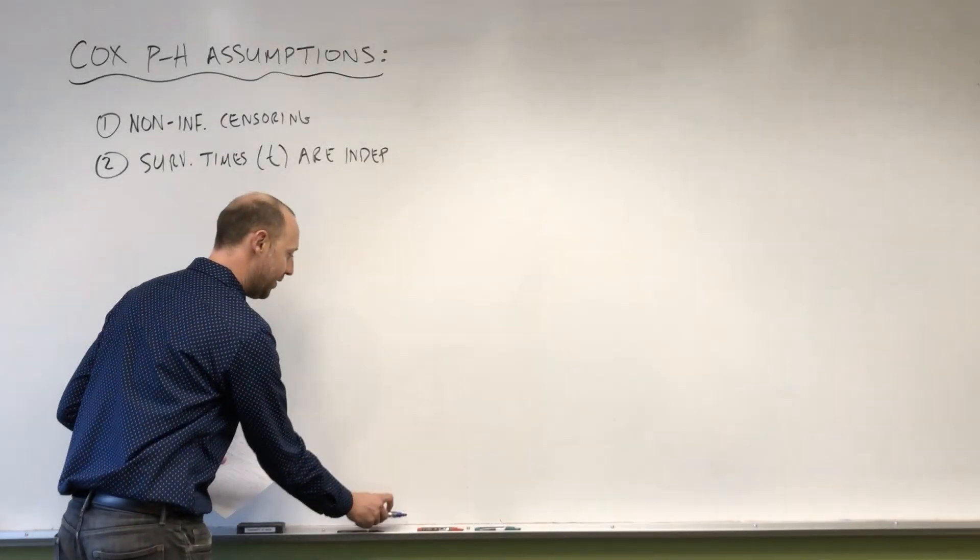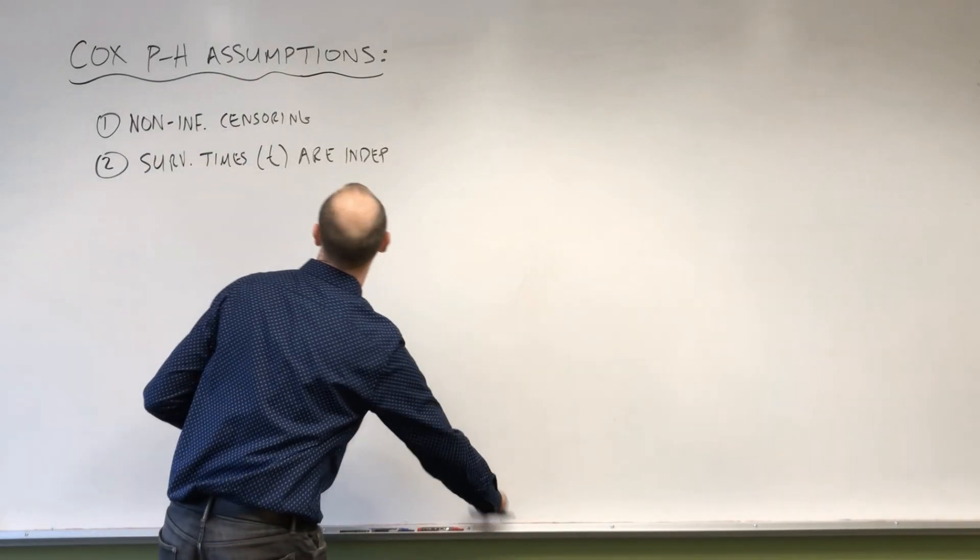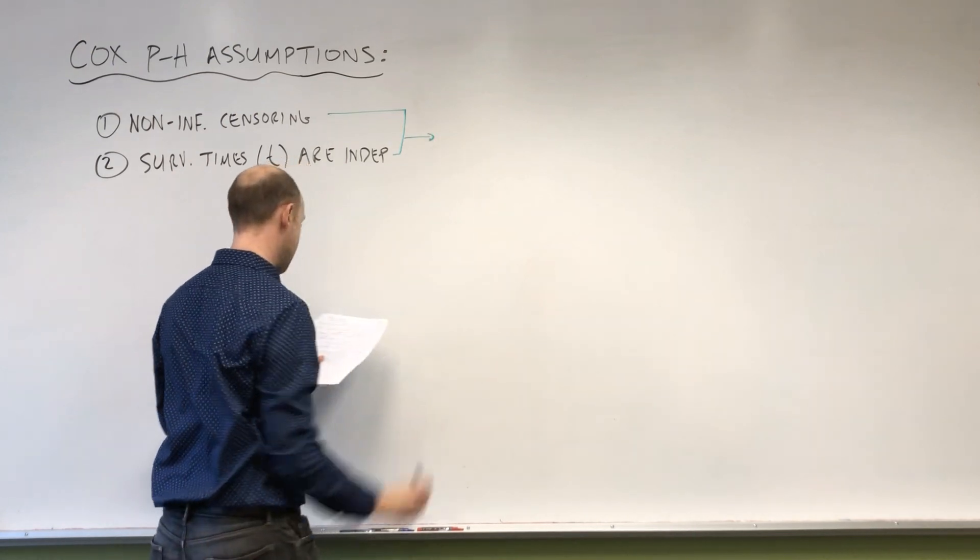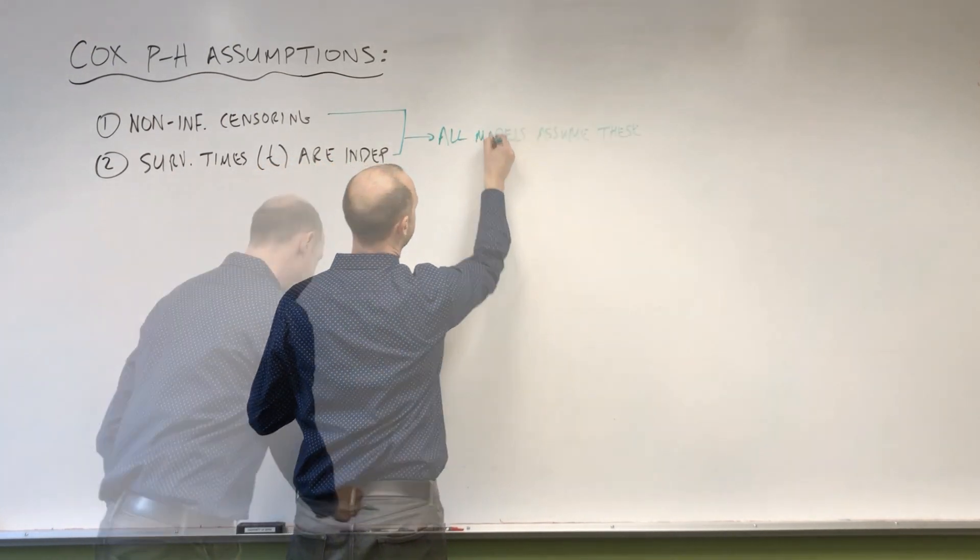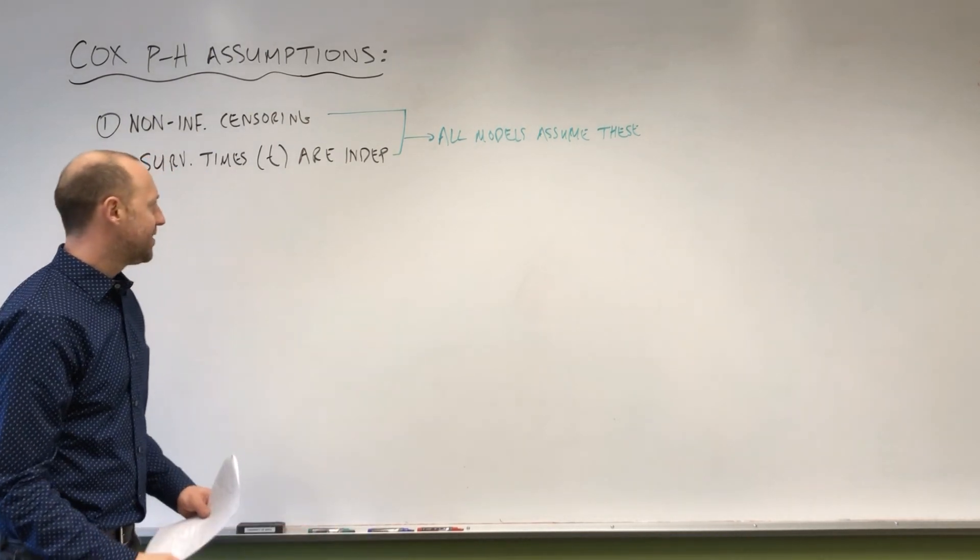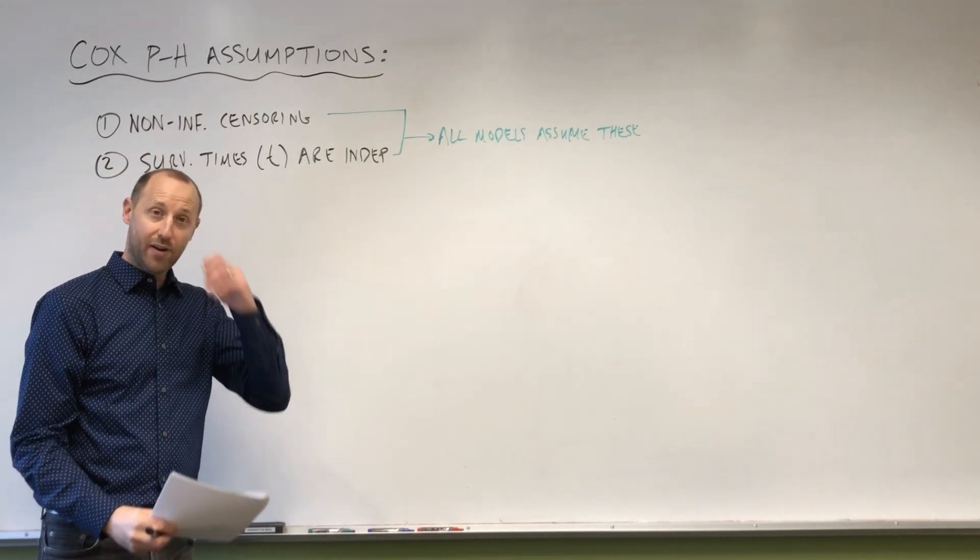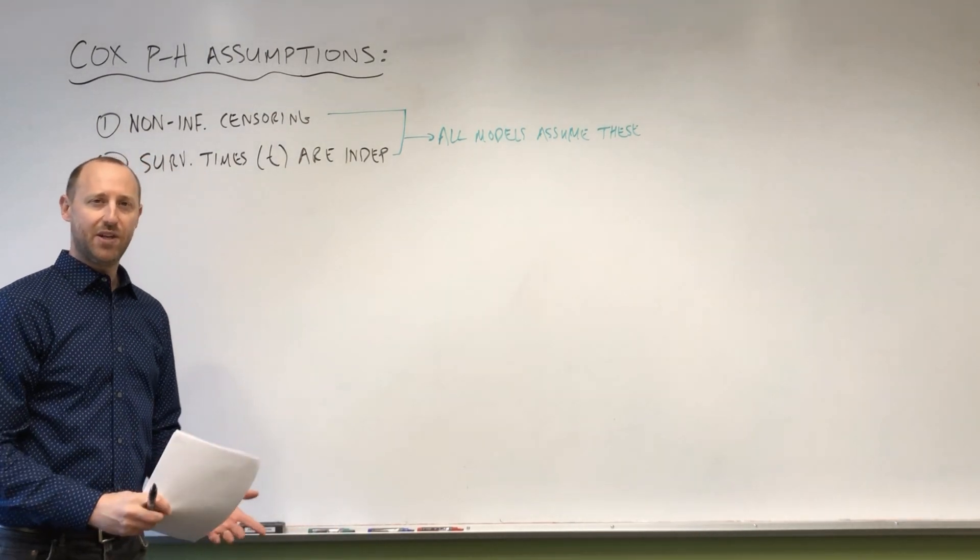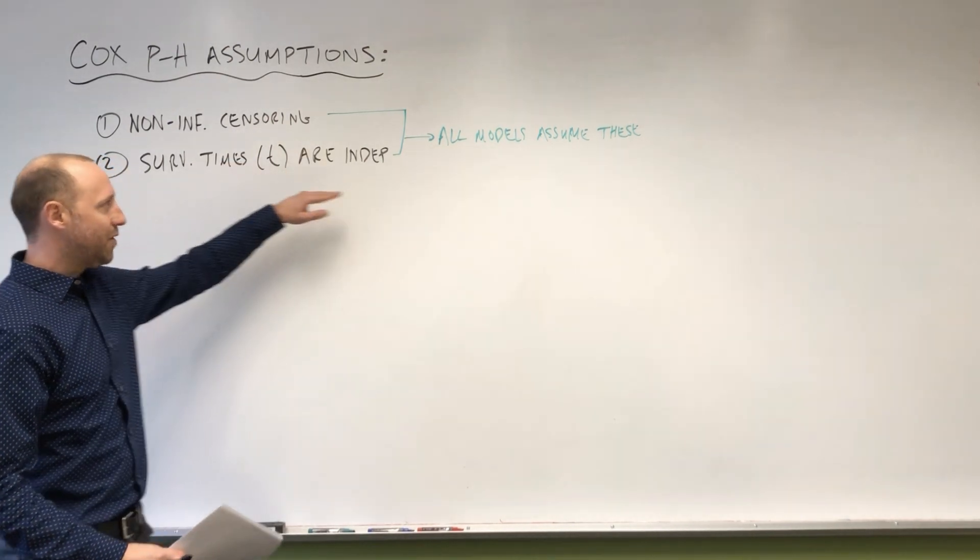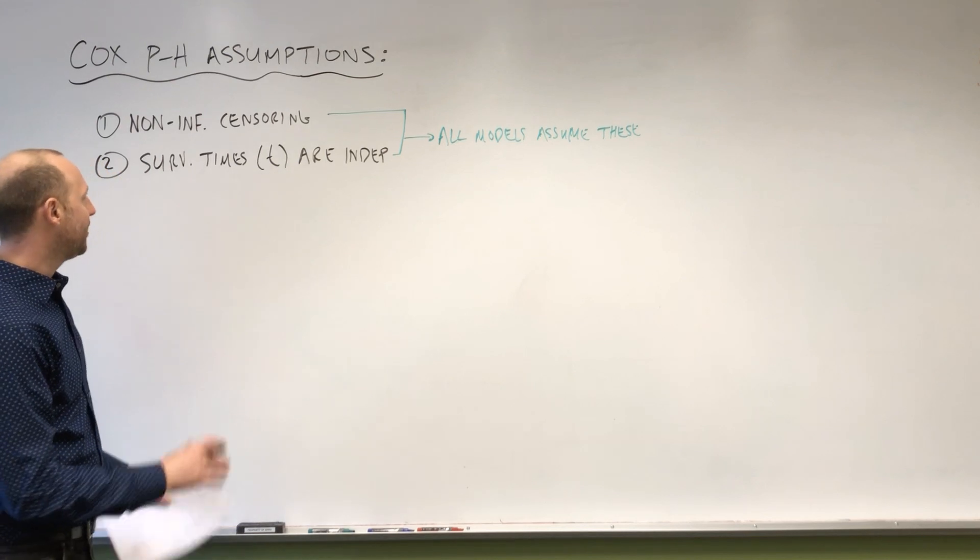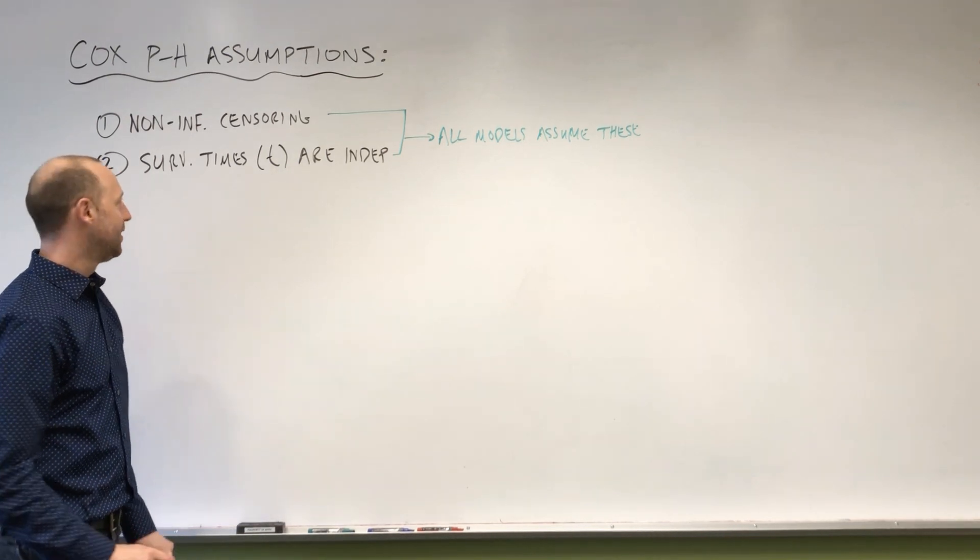One important point for these here, these two assumptions, I just want to point out that all models assume these. And what I mean by that is we've talked about the Kaplan-Meier survival model, as well as the exponential survival or the Weibull model. So those as well all make these assumptions. So these are not unique to the Cox proportional hazard model.